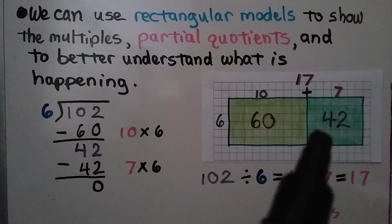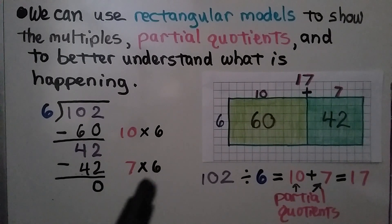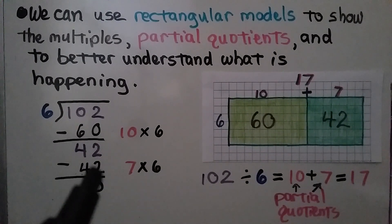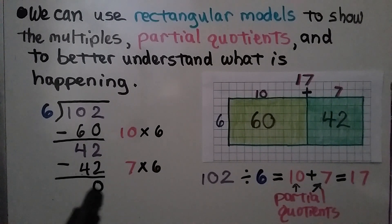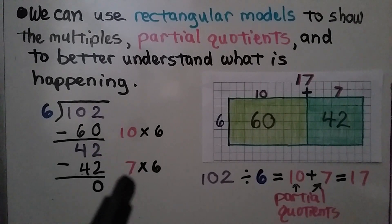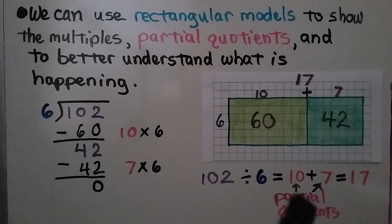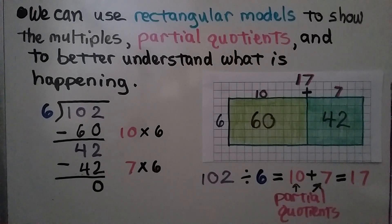We have 42 left over. And we think, well, 7 times 6 is 42. We subtract that and get a 0. Our partial quotients are 10 and 7, so 102 divided by 6 is equal to 10 plus 7. It's 17.